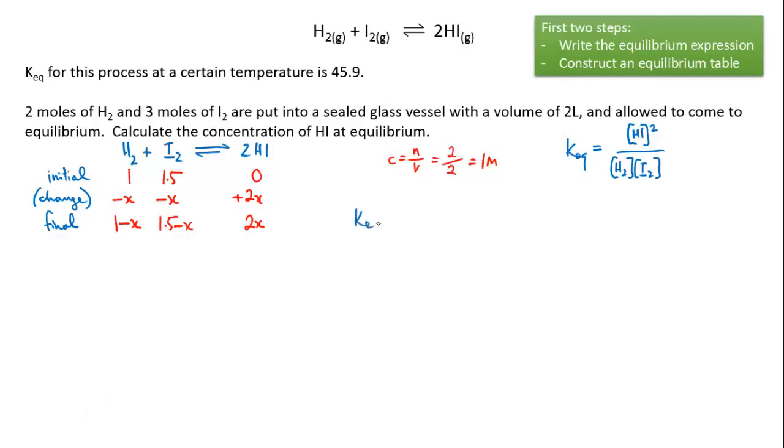our concentrations in terms of x into our equilibrium expression. So we're going to get Keq, we already know that this equals 45.9, which equals the concentration of hydrogen iodide on top, that's 2x and it's squared, over the concentrations of hydrogen and iodine multiplied together. So we've got 1 minus x and 1.5 minus x.